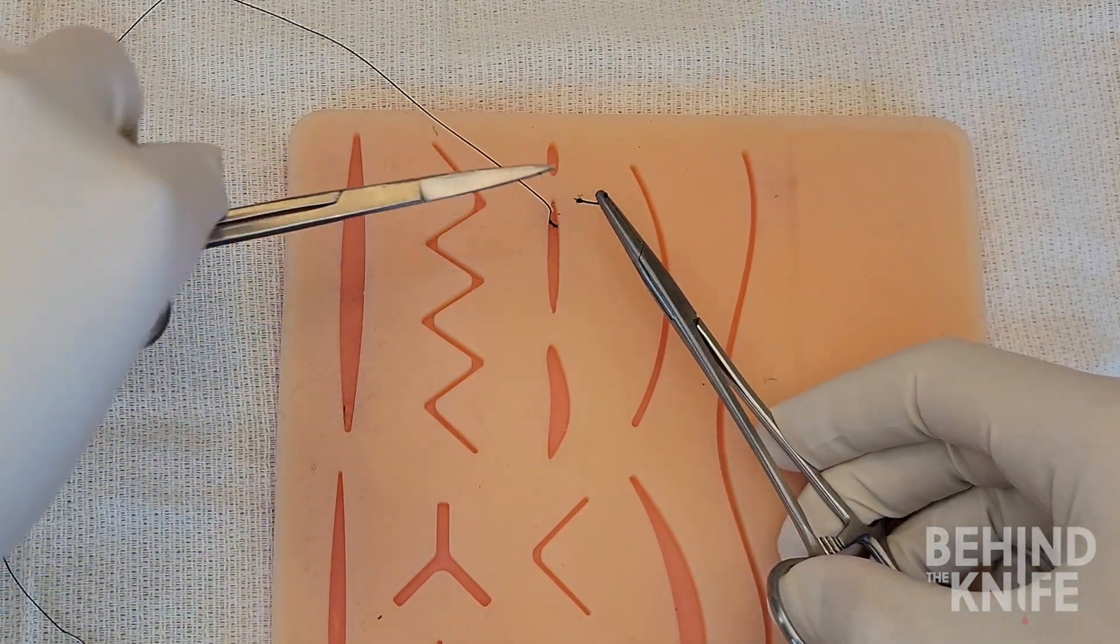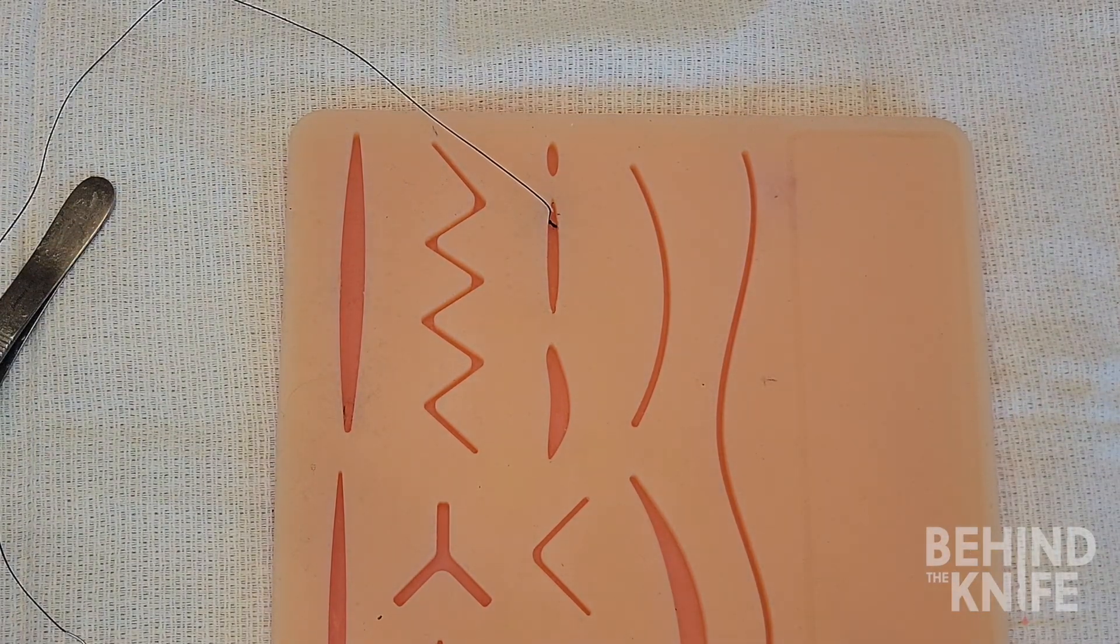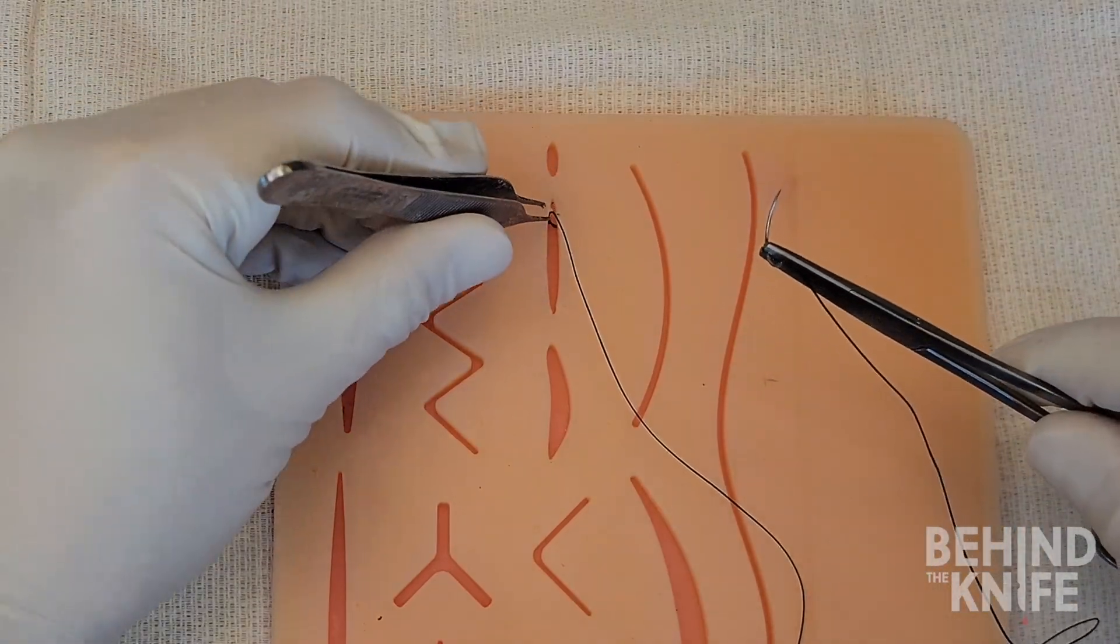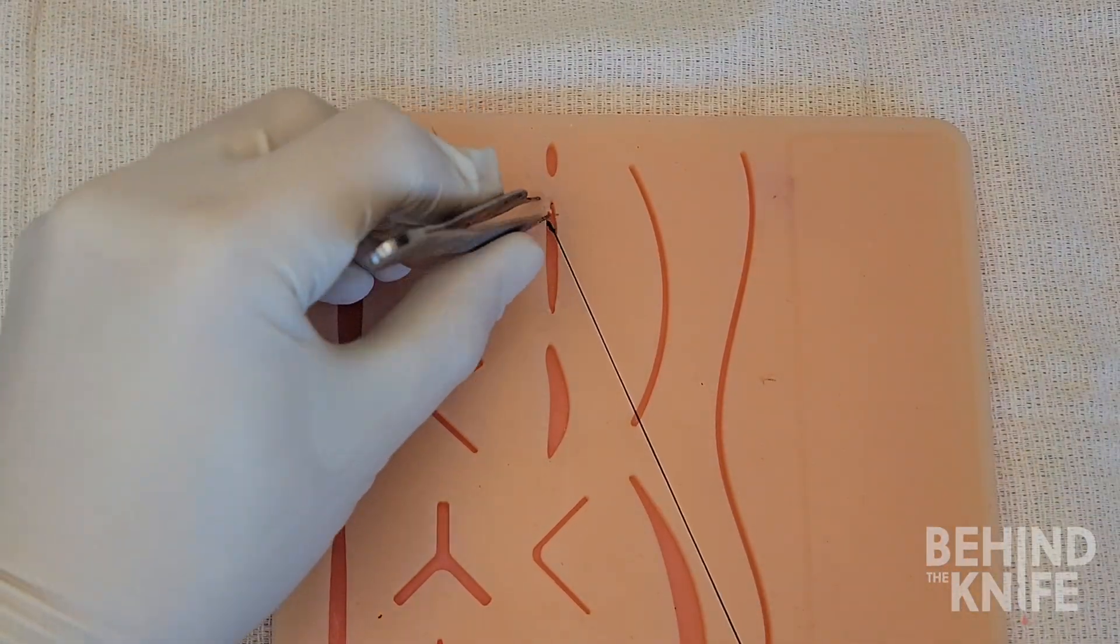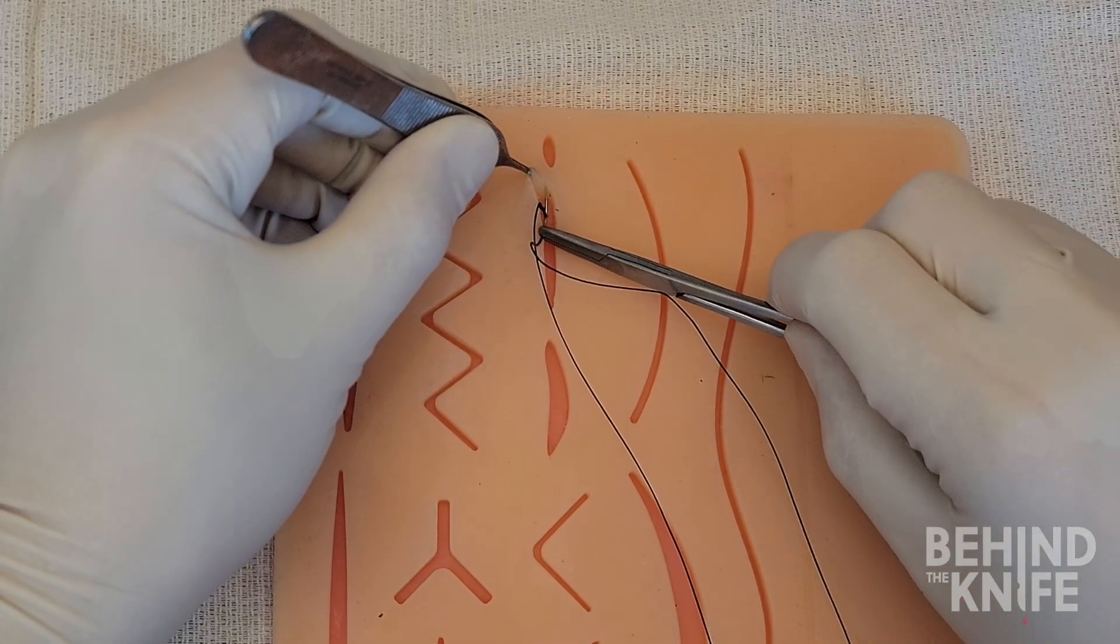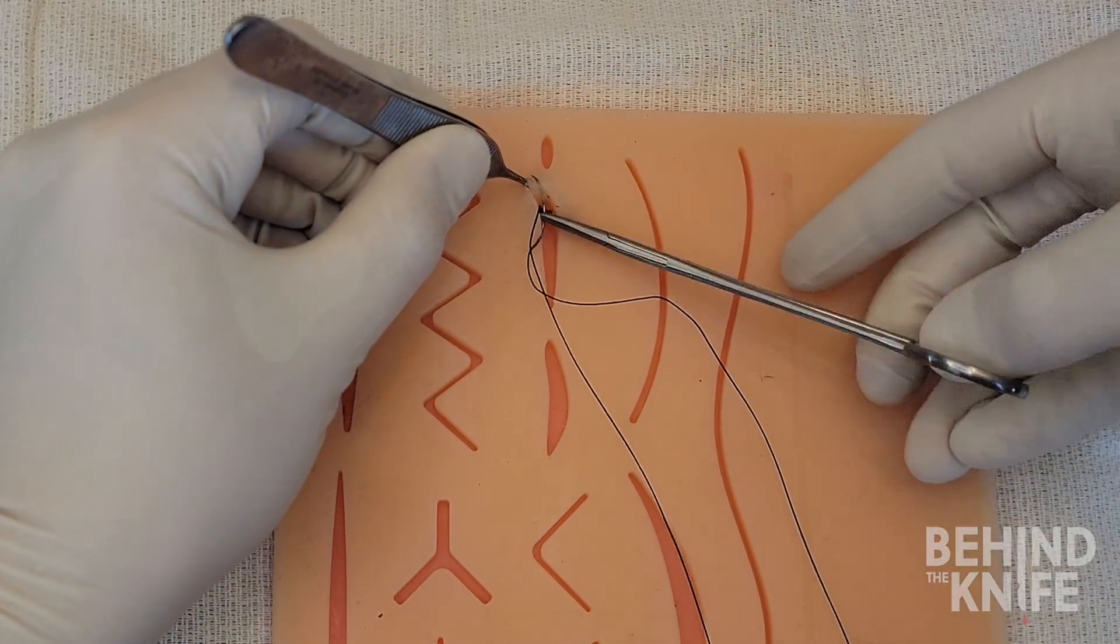After the knot is tied and the short end is trimmed, we will re-grasp the needle in the orientation for a backhand throw. From here, we will place the stitch at the top of the wound, starting in the dermis and coming out right at the apex at the dermal-epidermal junction.